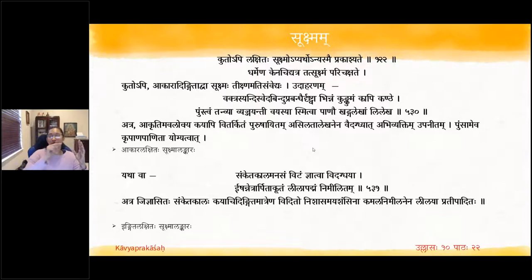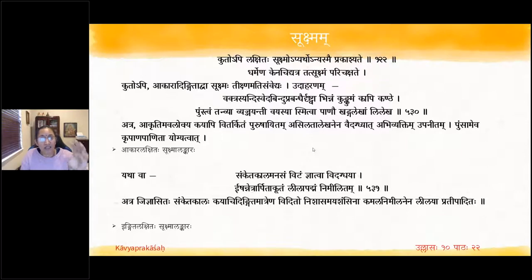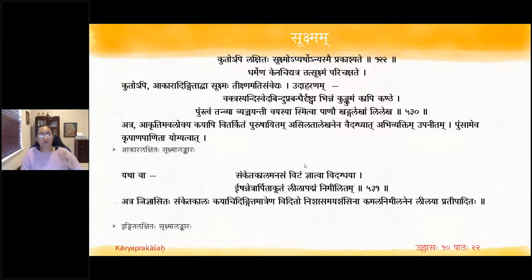Person two wants to let person one know: 'I have found out what you are trying to hide.' Then anyasmai prakashyate — it is revealed. The first type is akara lakshitah sukshmalankara: vaktra — by form; the vritti says only a person of sharp intellect, theekshnam atisamvedhyah, can figure out the subtle fact from the other's form or gestures.